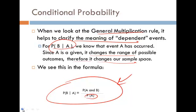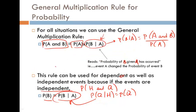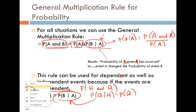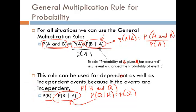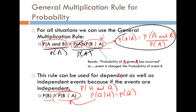Going back to the original formula: the probability of both events is the probability of the first times the conditional probability of the second. If we divide both sides by the probability of A, we get the conditional probability formula. It's an algebraic rearrangement.